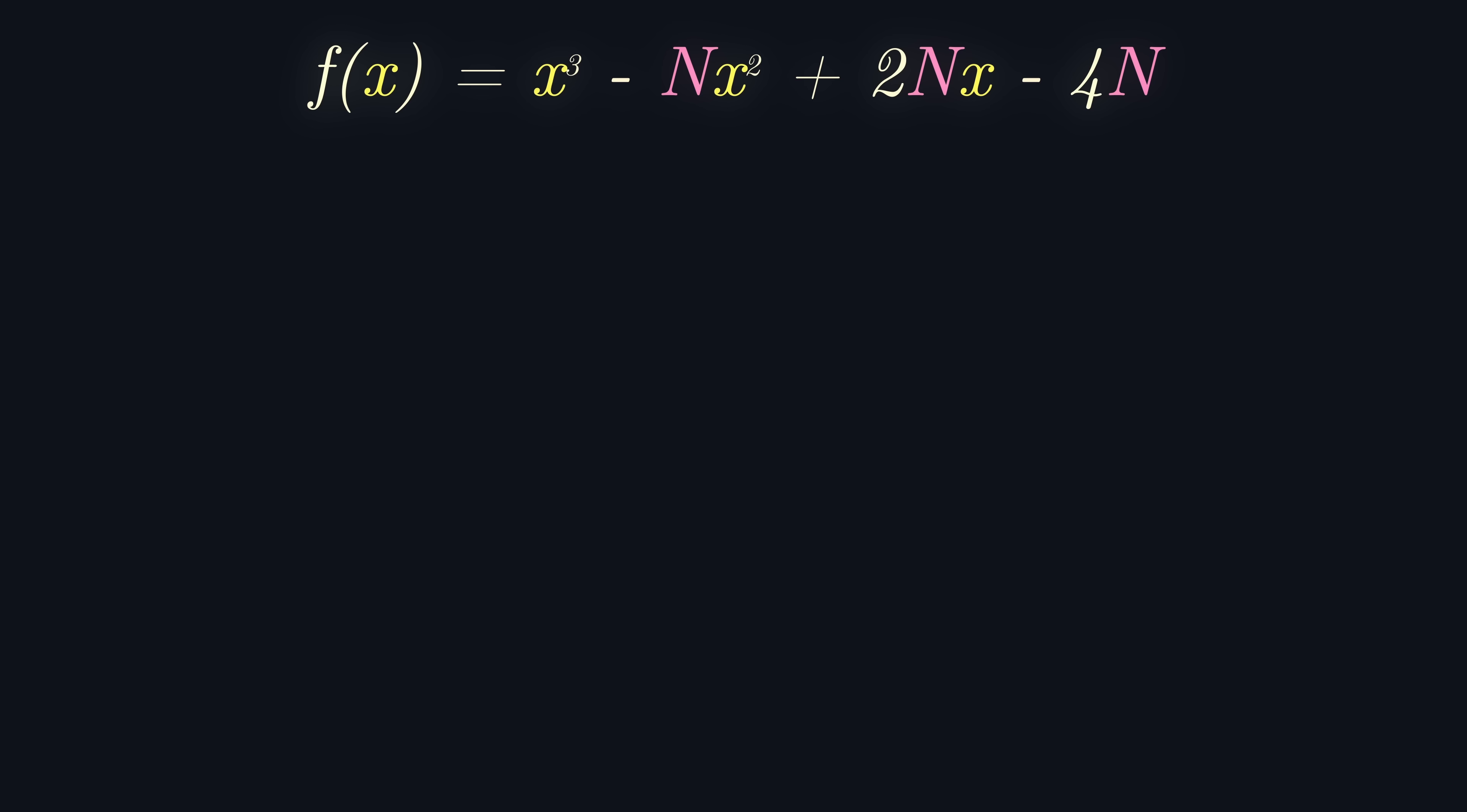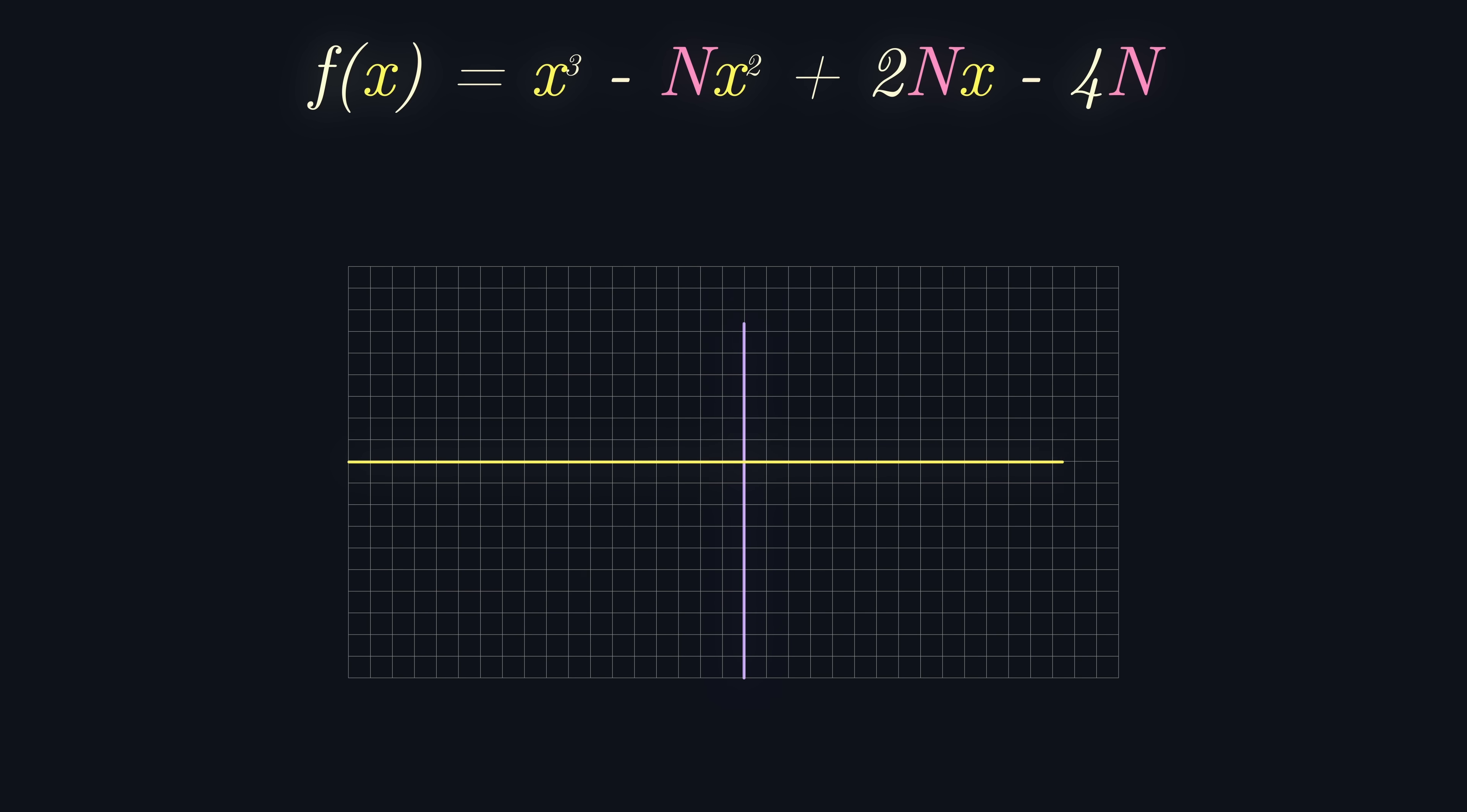Our final task is to study the roots of this cubic equation. In particular, to show that the result in question is impossible, we must show that f of x never has three positive real roots.